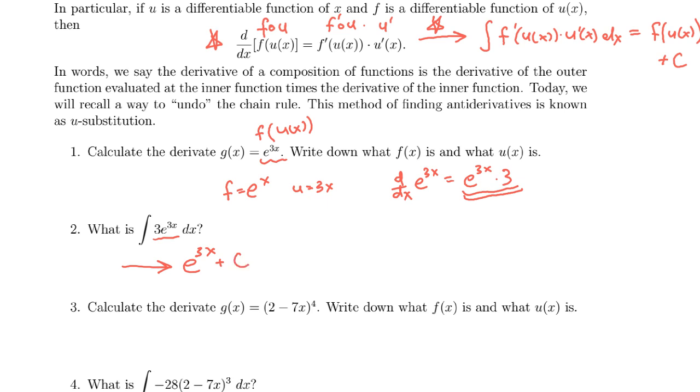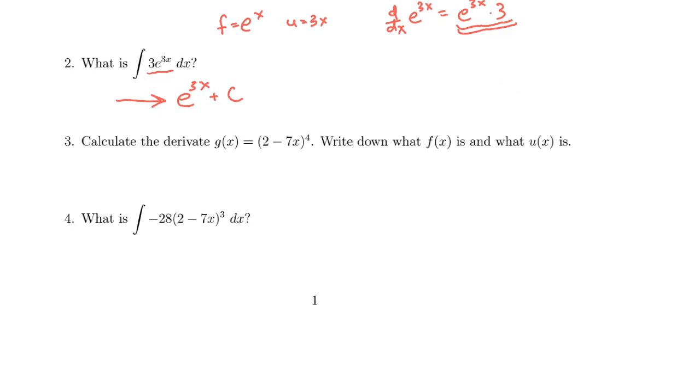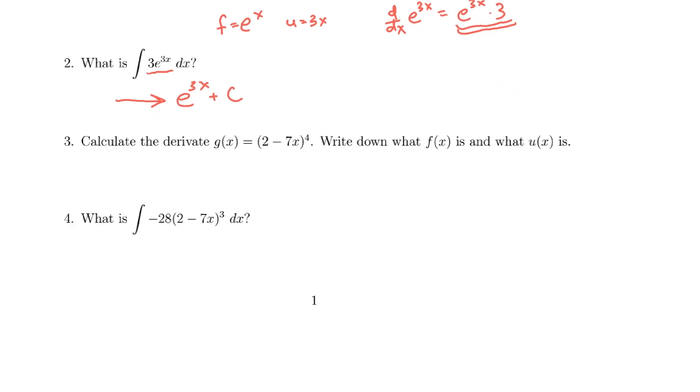And we can do a similar thing down here in problems 3 and 4. I will quickly point out that if we take the derivative of g here, the chain rule says that g prime should equal 4 times 2 minus 7x to the 3rd times the derivative of 2 minus 7x. So that will become 0 minus 7. And this whole thing simplifies down. Notice the 4 and the negative 7 can be multiplied together. This becomes negative 28 times 2 minus 7x to the 3rd.